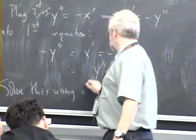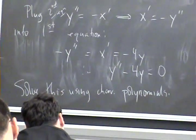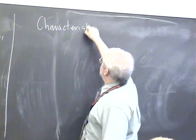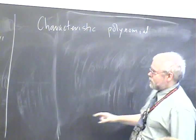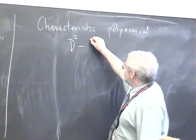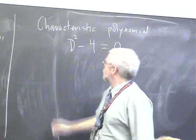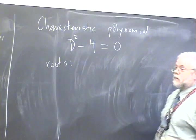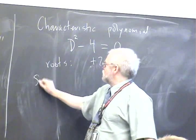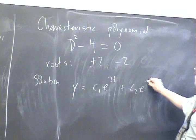It's a second order constant coefficient differential equation. We can solve this using characteristic polynomials. The characteristic polynomial - remember we get that by replacing derivatives by powers of d. So there would be two derivatives here and no derivatives here. This is the characteristic polynomial: d² - 4 = 0. And then you find the roots of this polynomial: d = ±2. So the solution is c₁e^(2t) + c₂e^(-2t).